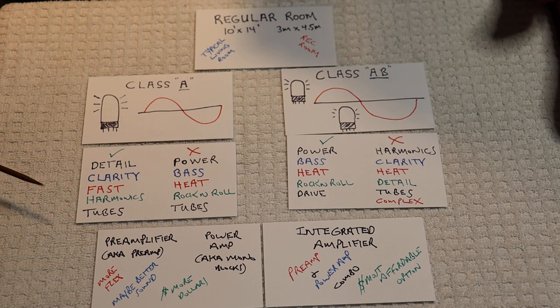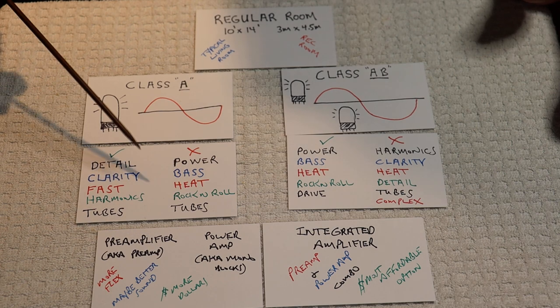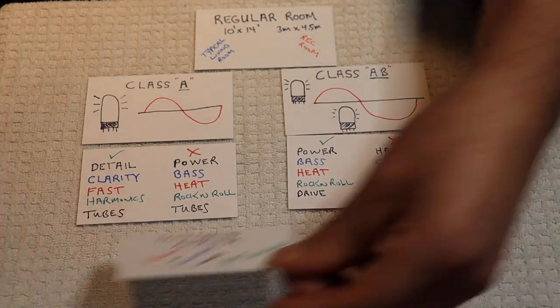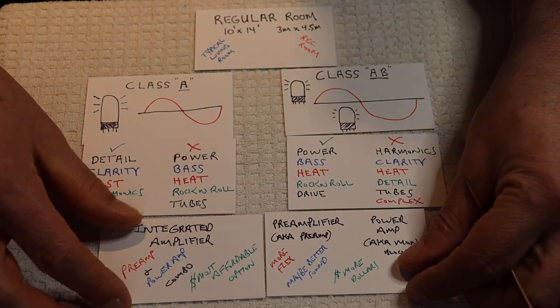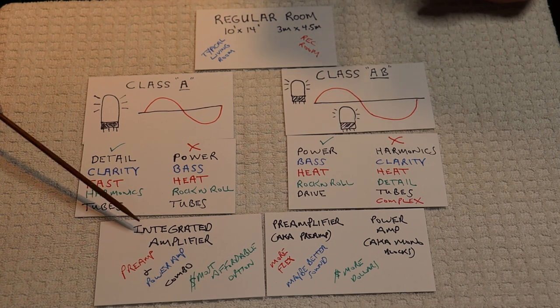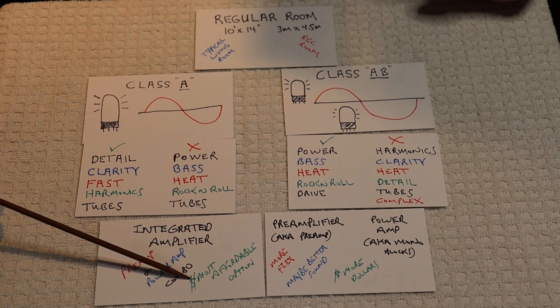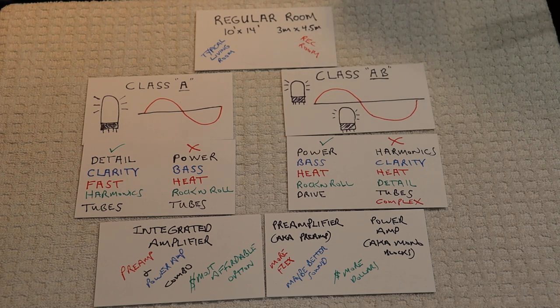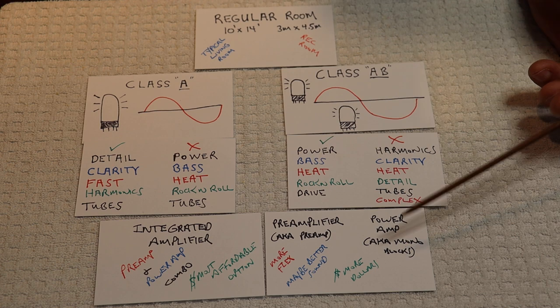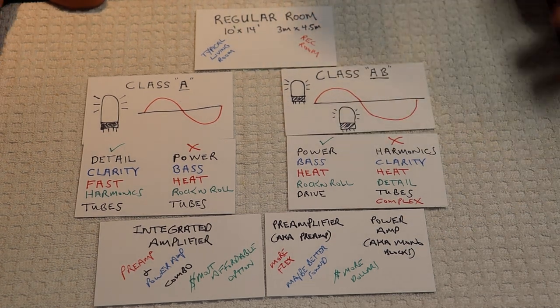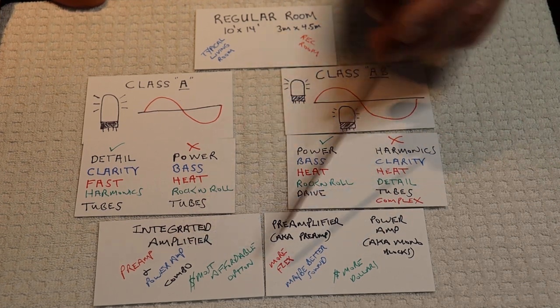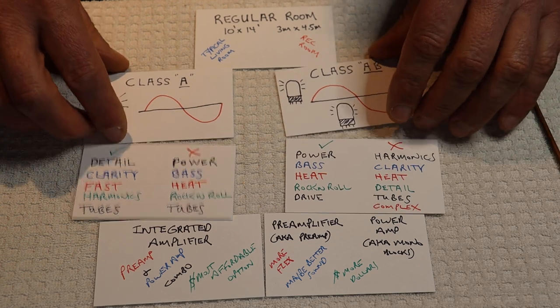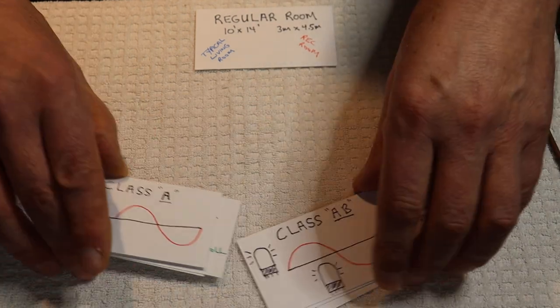Now, you can have separates - a preamp and a power amp for either type - and you can have an integrated amp in which the preamp and power amp are combined for either type. With an integrated amp, this is almost always going to be a more affordable option because you basically get your preamp and your power amp combined. It's not always going to be the case. There's always exceptions. With your separates, generally speaking it will cost more because you've got two chassis. That's a very general statement. You can find combos that will be cheaper than a great integrated amp, and vice versa.